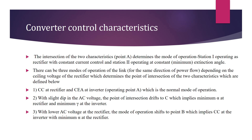The second mode: with a slight dip in AC voltage, the point of intersection dips to P, which implies minimum alpha at rectifier and minimum gamma at inverter. Alpha is the firing angle and gamma is the extinction angle. With lower AC voltage, the mode of operation shifts to point B, which implies constant current at the inverter.